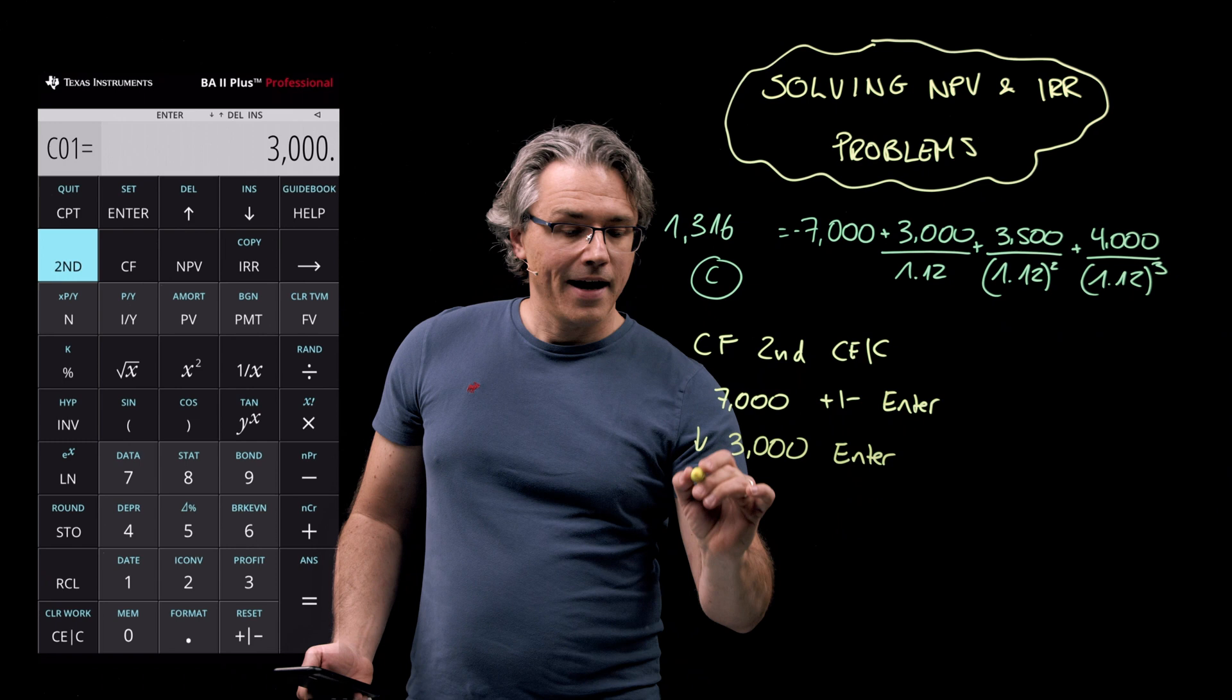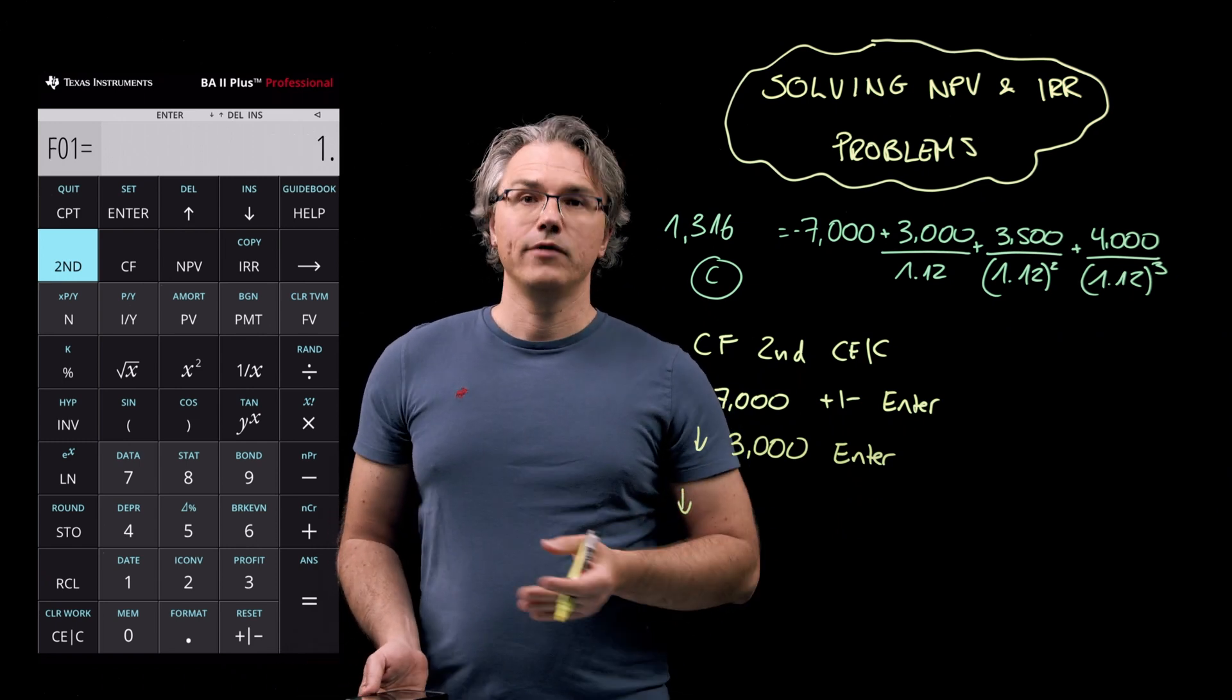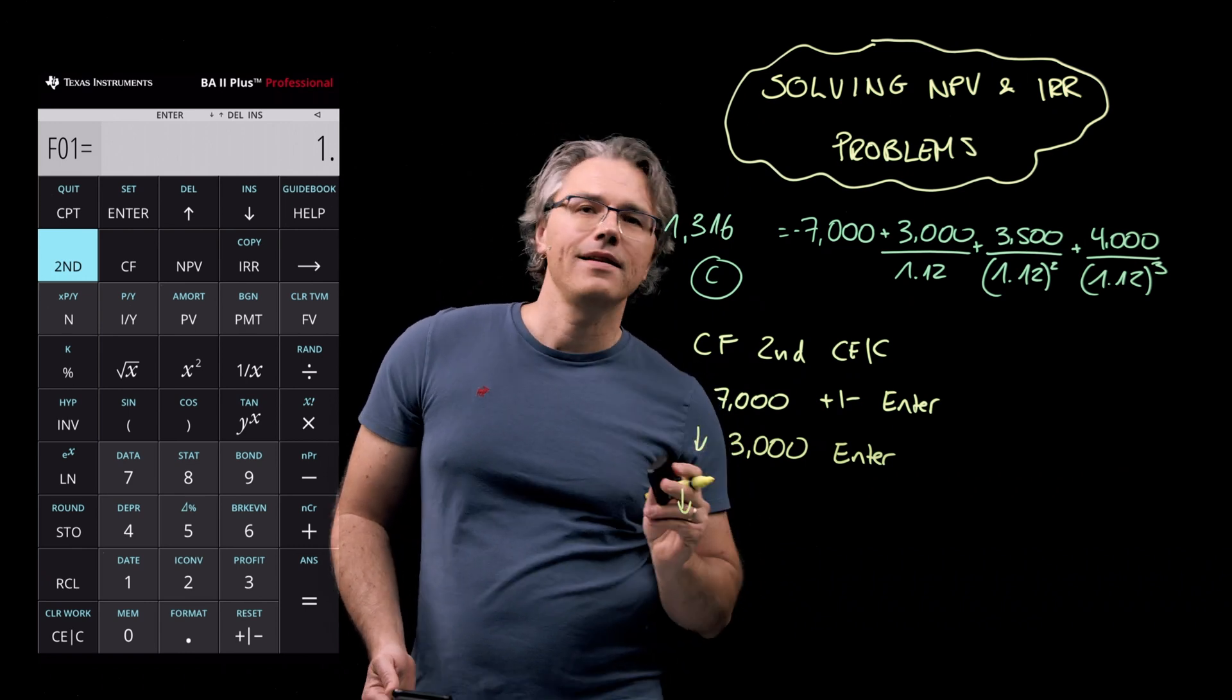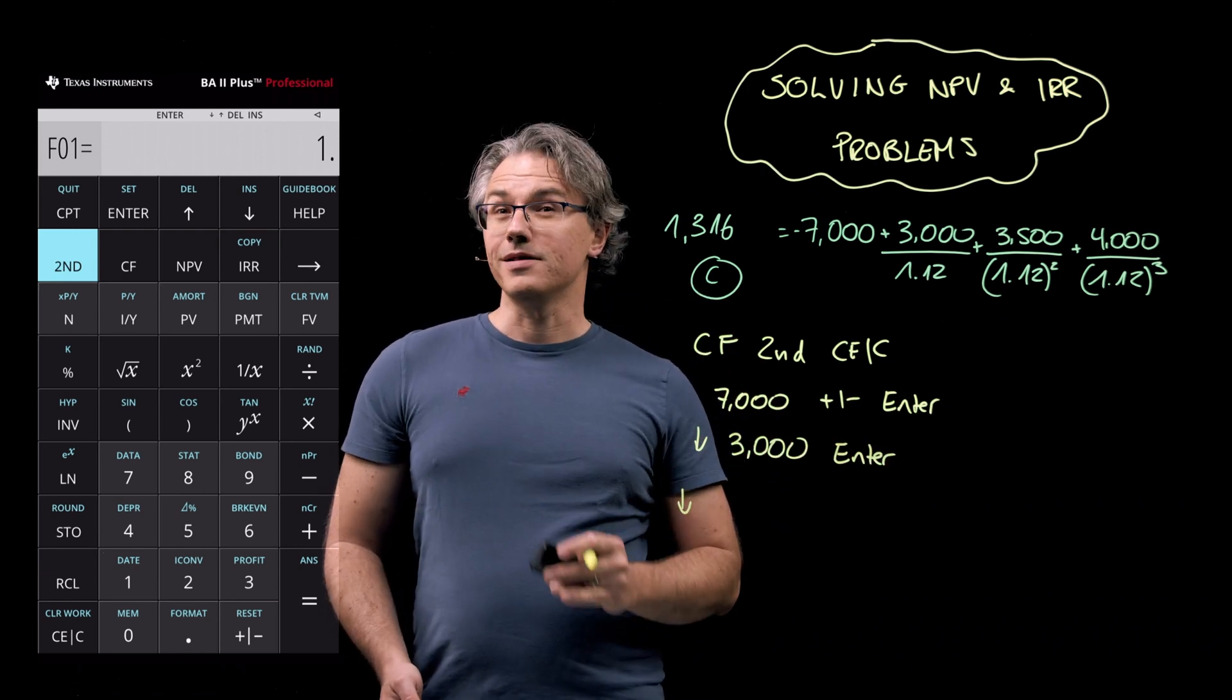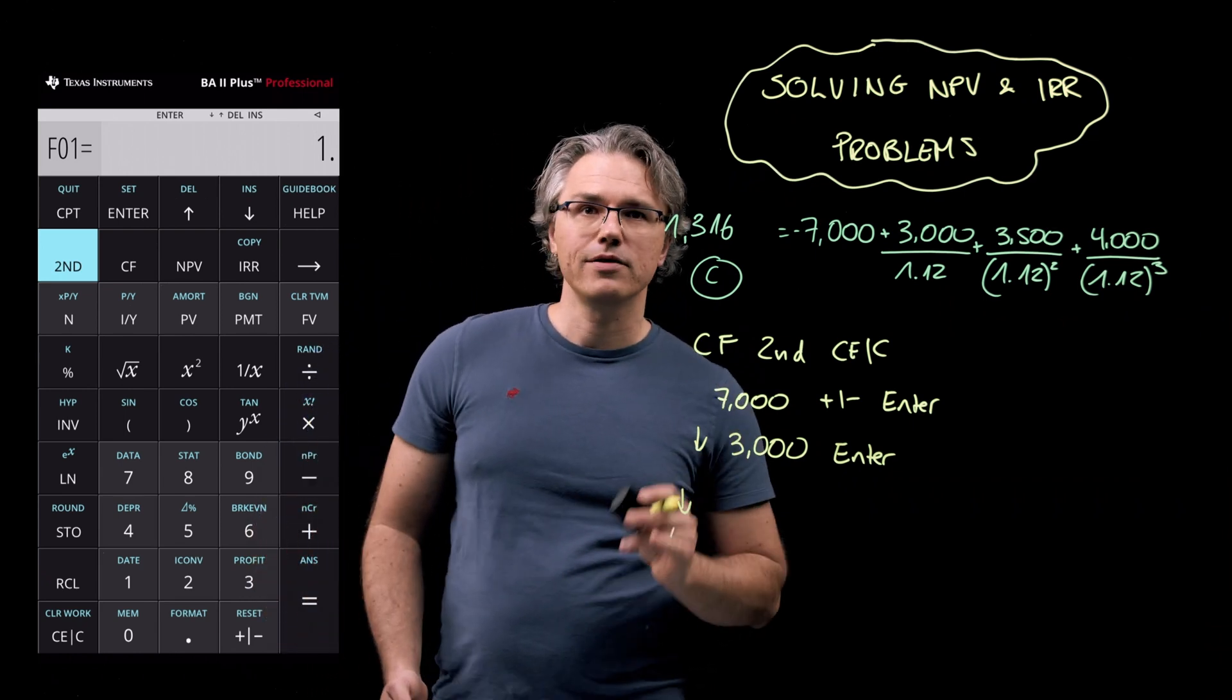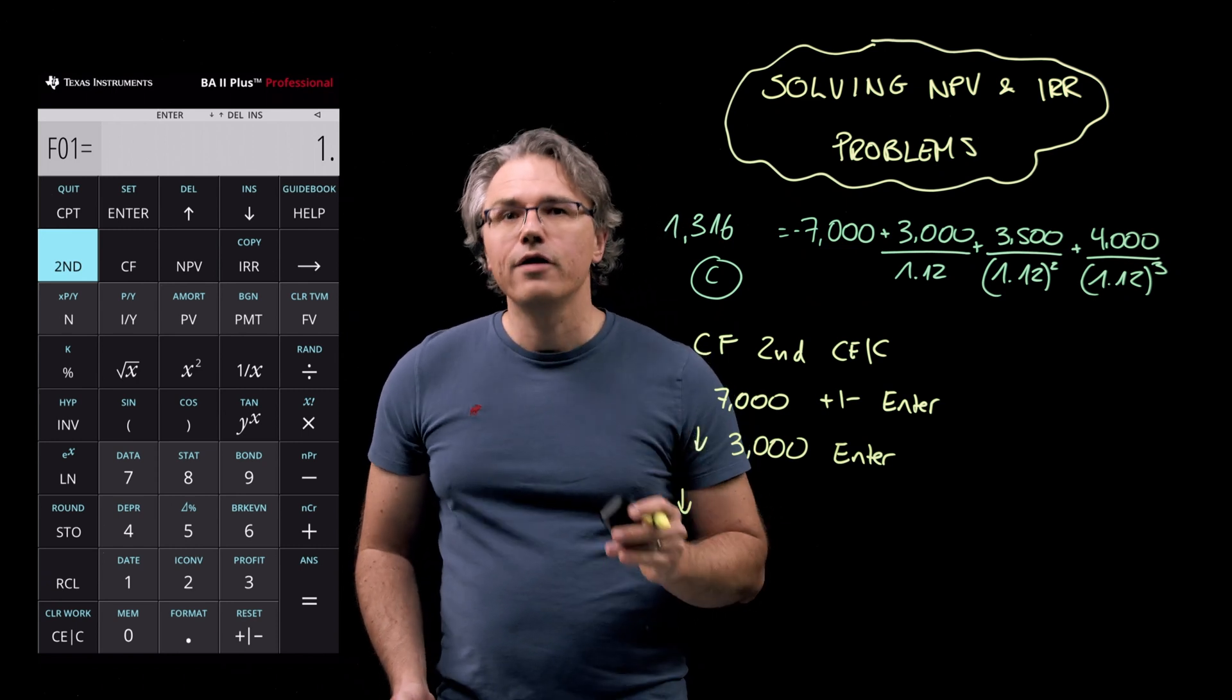We want to press the down arrow again. But if you do this just once, you will see F01. Now this allows you to tell the calculator how many times in a row that first cash flow occurs. By default, it is set at one, which is perfect for us because that 3000 euro cash flow occurs just once.